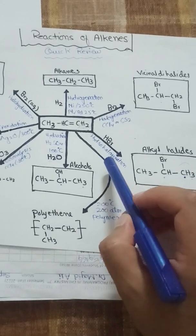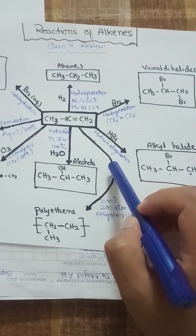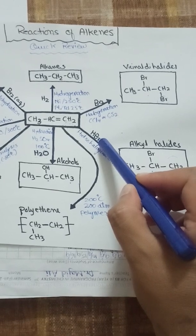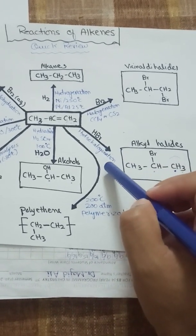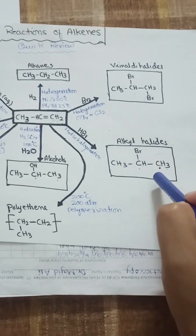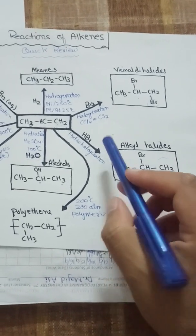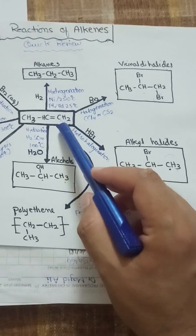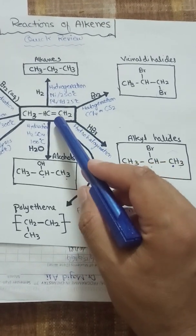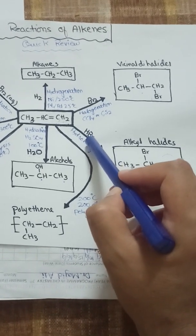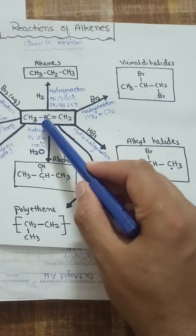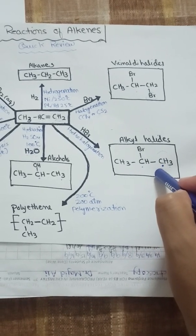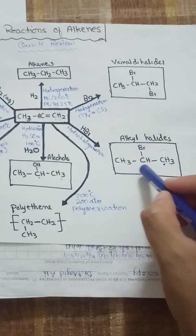The next reaction is hydrohalogenation, which is the addition of hydrogen and a halogen. We can use hydrogen fluoride, hydrogen chloride, or hydrogen bromide, and the product will be alkyl halides. In this case, the hydrogen of hydrogen bromide attaches to the carbon with the greater number of hydrogens, while the bromine attaches to the carbon with fewer hydrogens. So by Markovnikov's rule, we get 2-bromopropane, not 1-bromopropane.